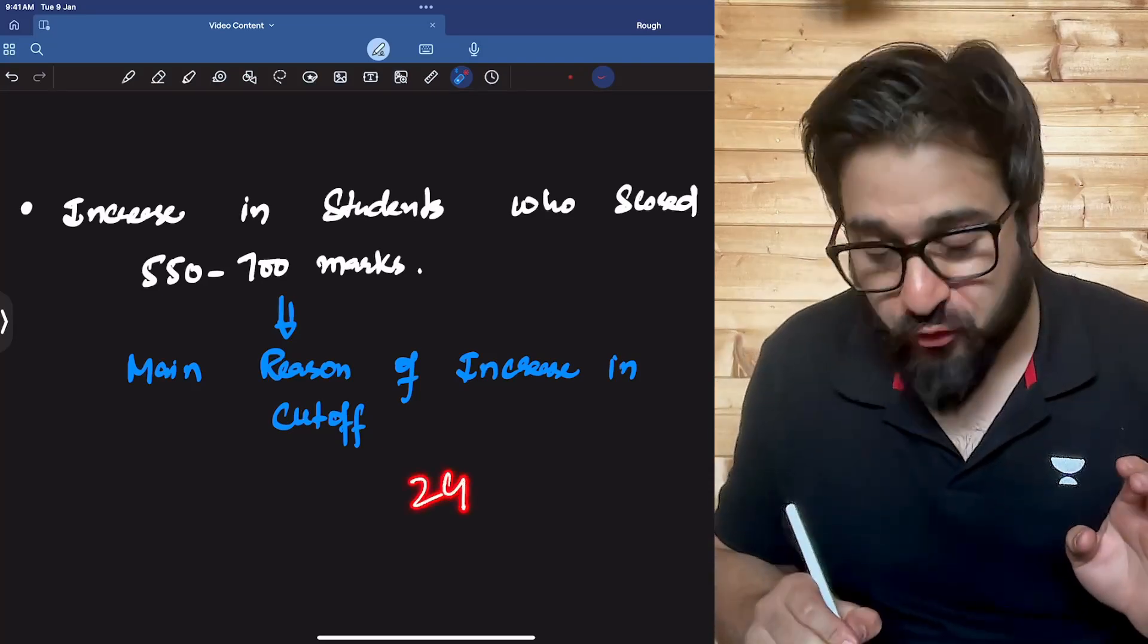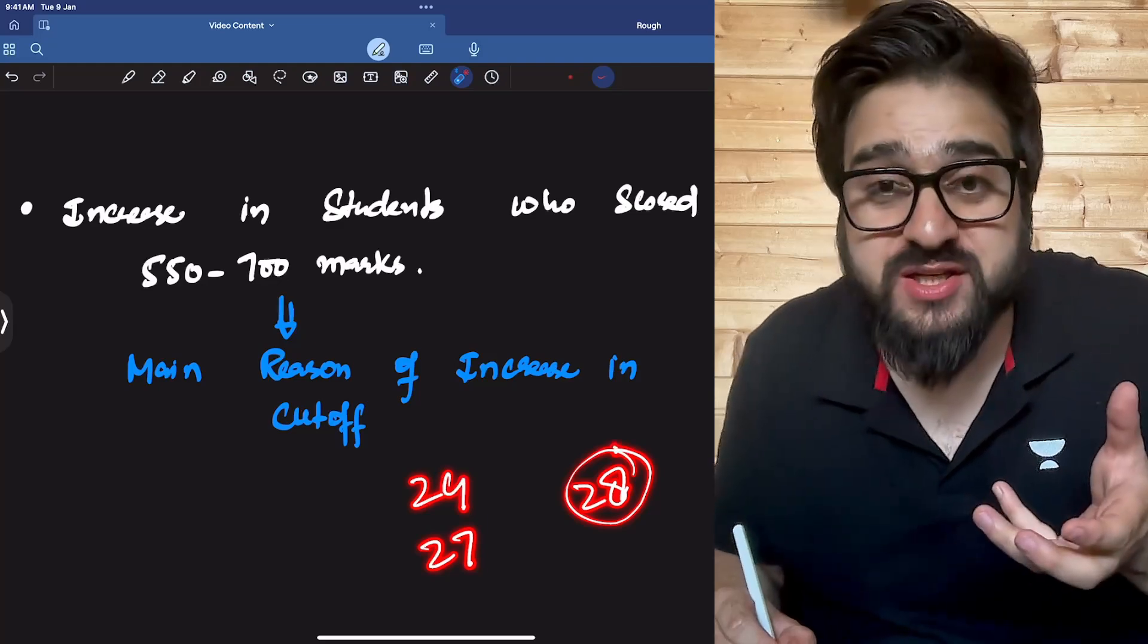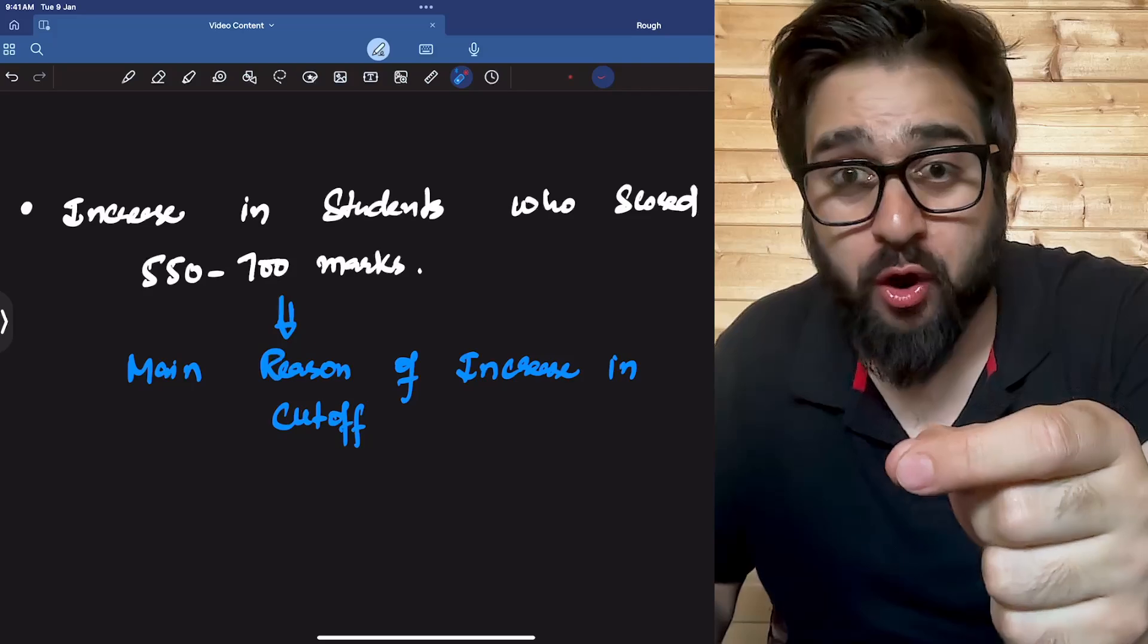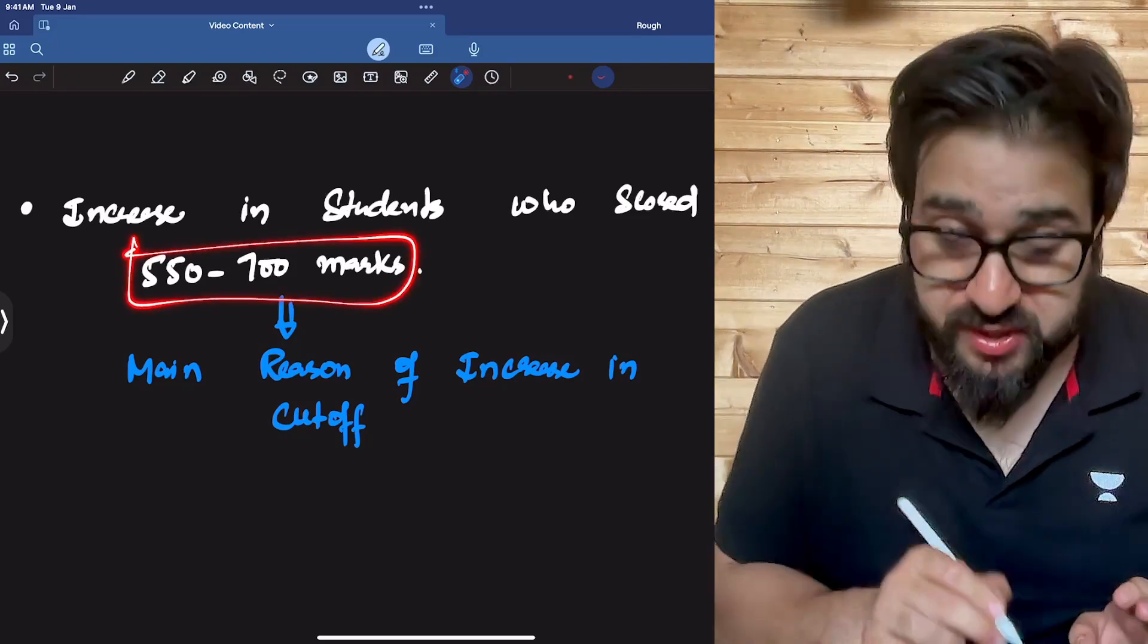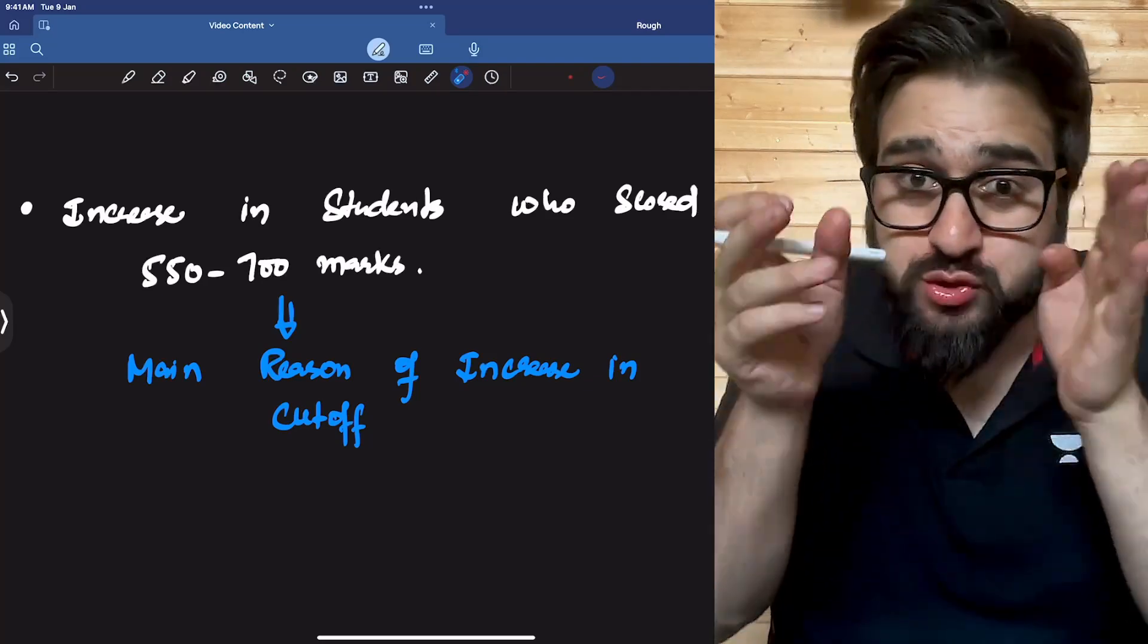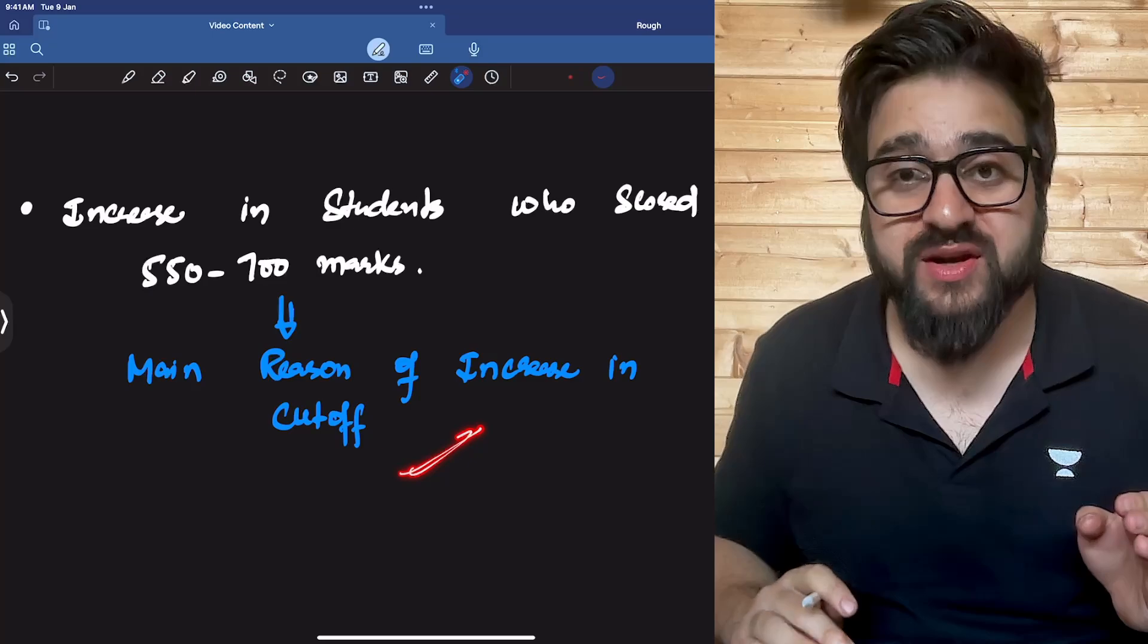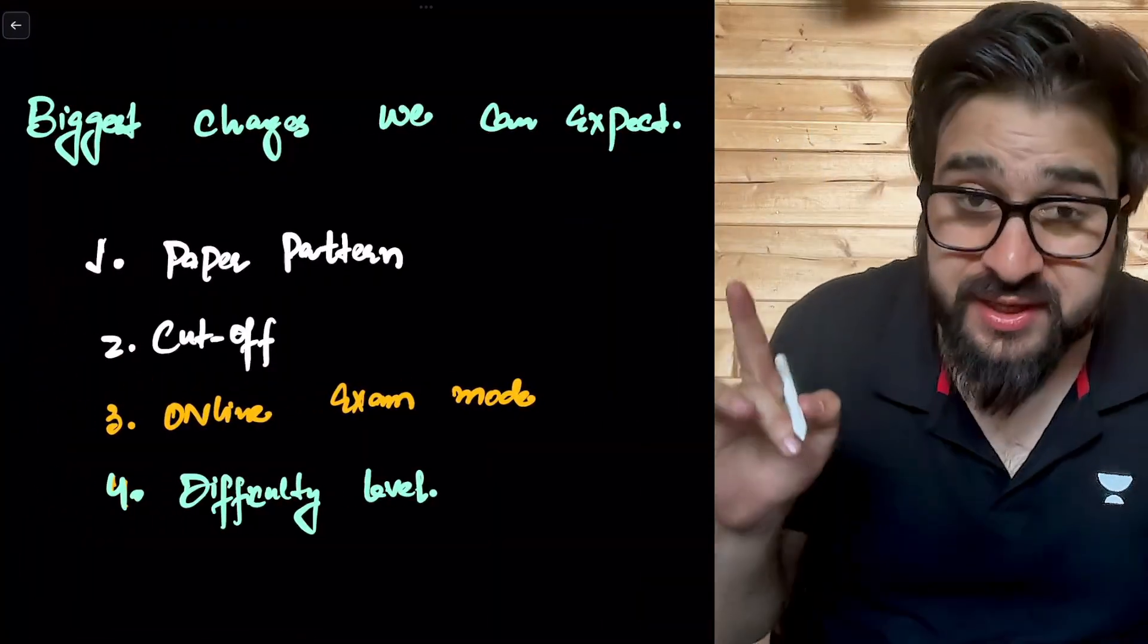These are the students who are your competition. Don't say 24 lakh, 27 lakh, 28 lakh students are my competition. No, there is only a particular category which is your competition if you are a serious aspirant. These students who fall into this category have increased, and that is the reason cutoff will increase.